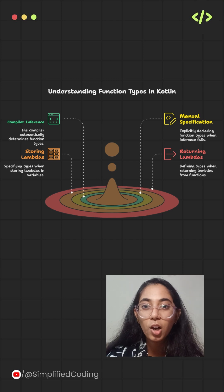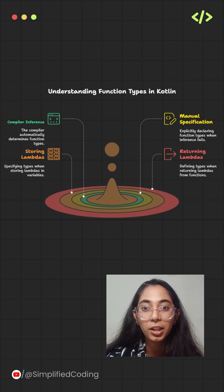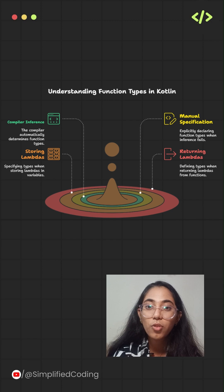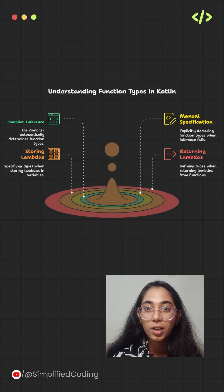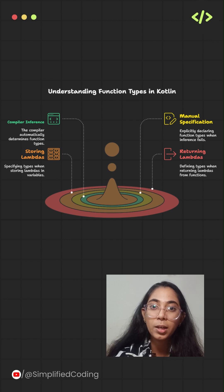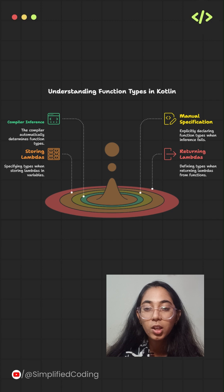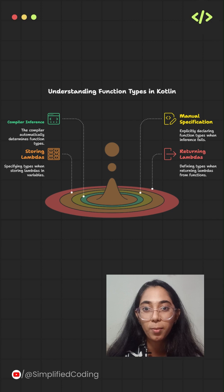In today's video we are going to discuss how we can use lambda expressions. But before using lambda expressions effectively, especially when returning them from functions, it's essential to understand function types. Functions in Kotlin also have types, just like integer or string. You can also declare them explicitly to tell the compiler how the lambda behaves. Kotlin can usually infer function types, but sometimes you'll need to specify them manually as well.